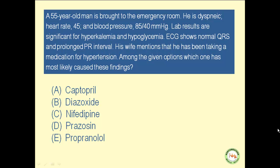Why is diazoxide used in the treatment of insulinoma? Because it inhibits secretion of insulin from the beta cells of the pancreas, and as a result, it causes hyperglycemia. But our patient had hypoglycemia, and not hyperglycemia. Therefore, diazoxide cannot be the correct answer. How does diazoxide inhibit insulin secretion? By inhibiting the calcium channels on the beta cells, and as a result, inhibiting release of preformed insulin from the pancreas.